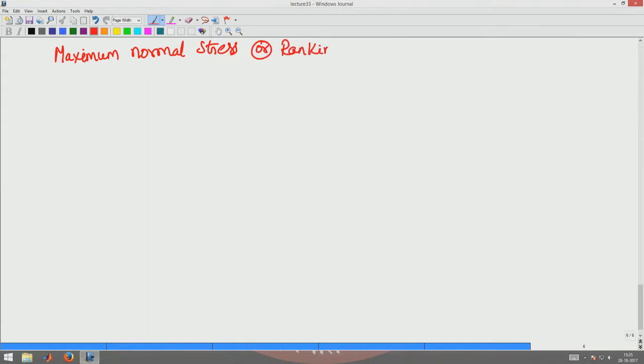What it says is sigma n normal stress maximum has to be lesser than or equal to kappa. The normal stress maximum is given by maximum of sigma 1, sigma 2, sigma 3. Here it is not absolute value, it goes with the sign, has to be less than or equal to kappa.